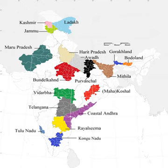Before independence, India was divided into British-administered provinces and nominally autonomous princely states, which were governed by the British administration. After the partition of India, some of these administrative divisions became part of the Dominion of Pakistan, whilst the remaining states and provinces formed the Dominion of India. The colonial system of administration continued until 1956, when the States' Reorganisation Act abolished the provinces and princely states in favour of new states based on language and ethnicity.